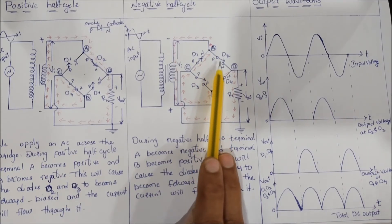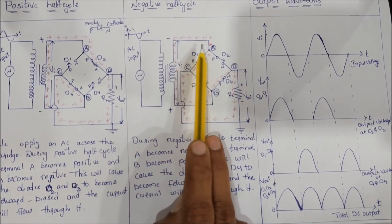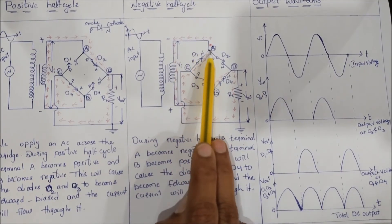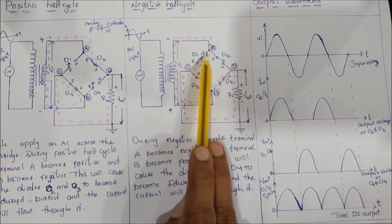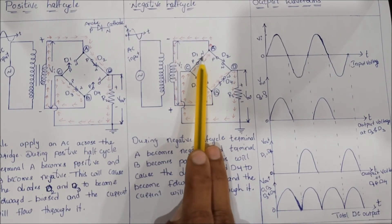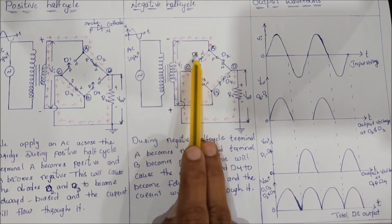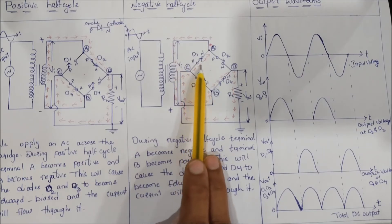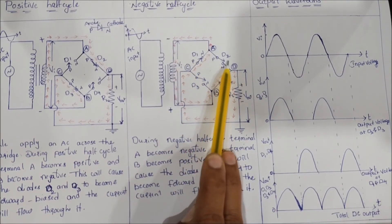Diode D4 is forward biased. Diode D1 is also forward biased because A is negative and connected to D1's cathode terminal. And diode D2 is reverse biased.